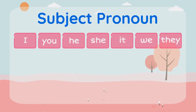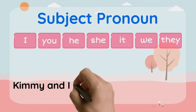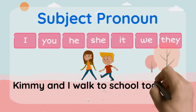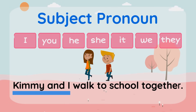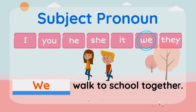Let's look at the next sentence. Kimmy and I walk to school together. Let's replace Kimmy and I with a pronoun. What should we replace it with? Kimmy and I should be replaced with we. We walk to school together.